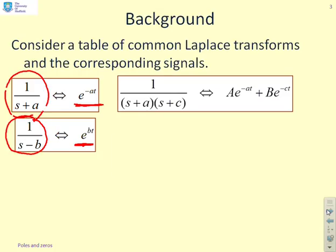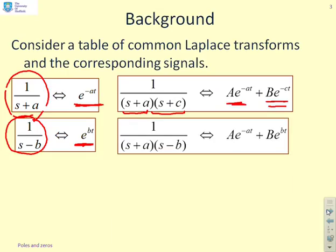Here's a different one. 1 over s plus a times s plus c will give you two exponentials. I'm not worried about what the residues capital A and capital B are, but these are both convergent. The s plus a and the s plus c correspond to convergent exponentials. What about 1 over s plus a s minus b? When you do the inverse Laplace, you get a convergent exponential corresponding to the s plus a, but a divergent exponential corresponding to the s minus b.